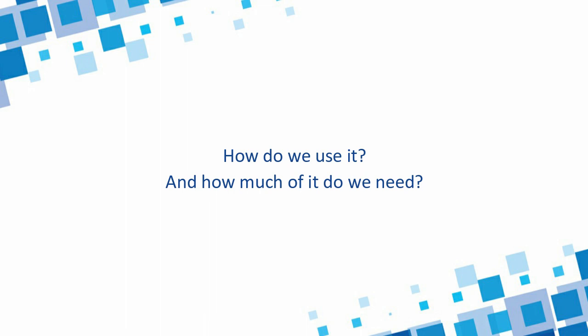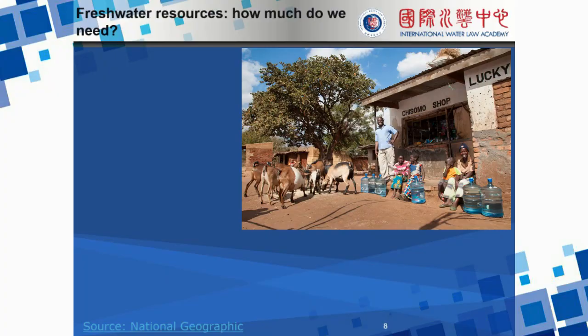Now that we know where we can find the world's fresh water, the next question is how do we use it and how much of it do we need? When you look at the daily use of fresh water resources, it's important to understand that there is a great discrepancy in the amount of fresh water used for daily consumption. For example, if we look at a family in Malawi, this family uses about 120 liters of water a day — these bottles in the picture represent this daily water need.